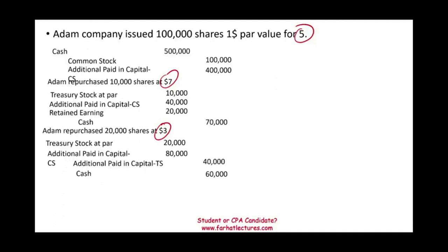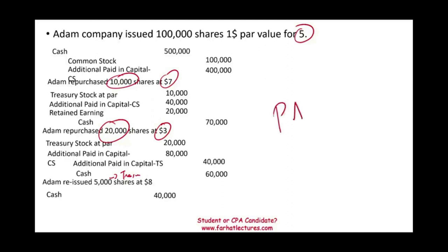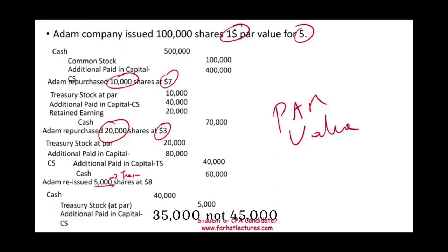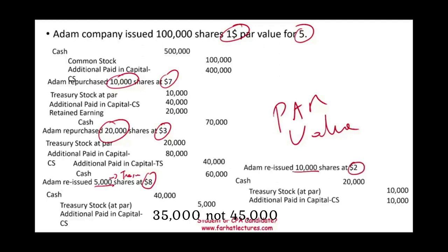Now Adam reissues 5,000 shares of treasury stock at $8. Debit cash 40,000; credit treasury stock at par 5,000 (5,000 shares × $1 par); and additional paid-in capital common stock is the plug: 35,000. In a second reissue scenario, 10,000 treasury shares are reissued at $2. Debit cash 20,000; credit treasury stock at par 10,000 (10,000 × $1); and additional paid-in capital common stock is 10,000 as the plug to balance the entry.